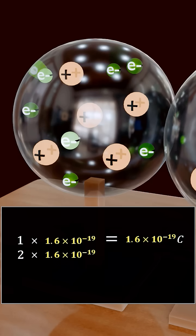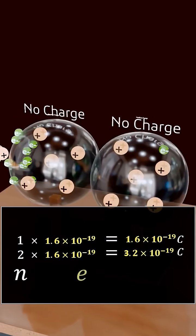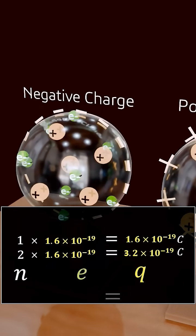If it gains 2 electrons, its charge is 3.2 into 10 to the power minus 19 coulomb. If it gains N electrons, the total charge is Q is equal to NE.